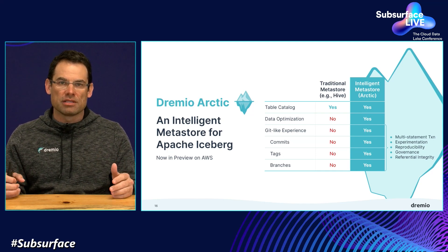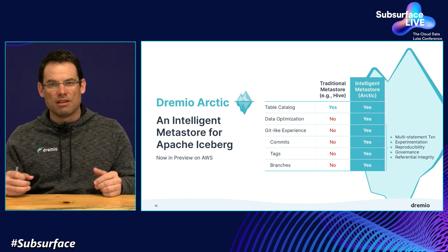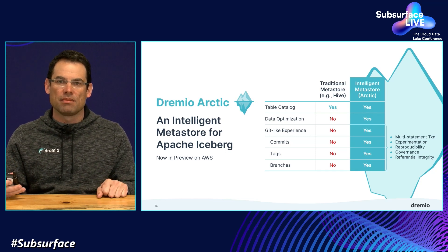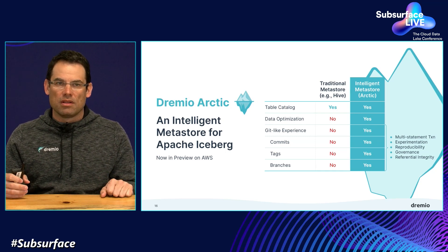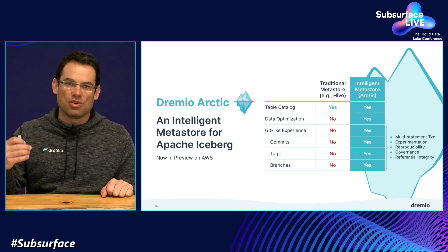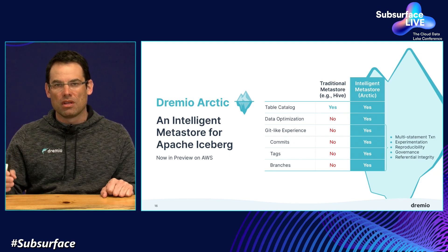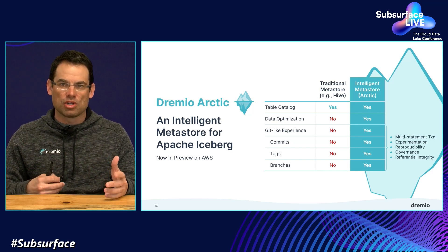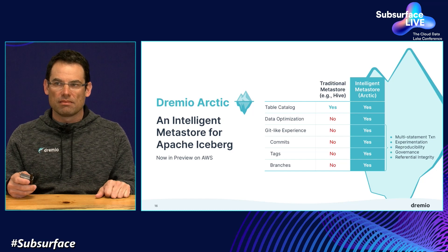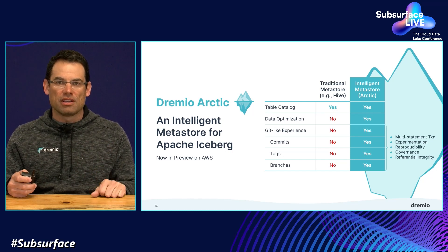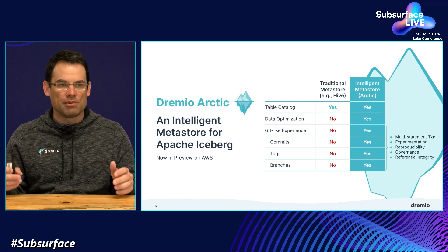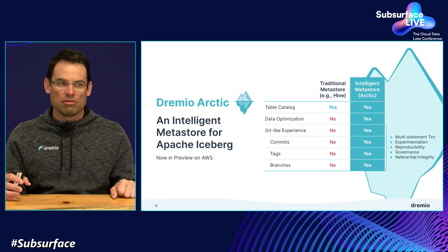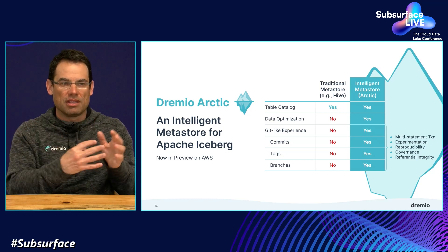Arctic also provides data governance. If you've ever looked at GitHub or Git and seen the log of everything that's happened in the system — who's changed every file — Arctic provides that for data. You can see exactly what's changed for every table and every view, both at the data level and the metadata level: schemas that have changed, partitioning specs that have changed, permissions that have changed. You also have referential integrity, so if you have multiple tables that refer to one another in joins, you're never in a situation where you've updated one but not the other.